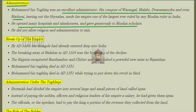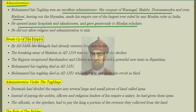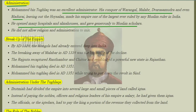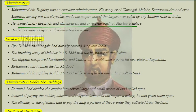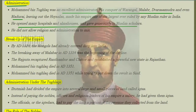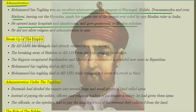Muhammad bin Tughlaq was an excellent administrator. He conquered places such as Warangal, Malabar, Dwarasamudra, and Madurai, making his empire one of the largest ever ruled by any Muslim ruler in India. He opened many hospitals and almshouses, gave generously to scholars, and did not allow religion and administration to mix.